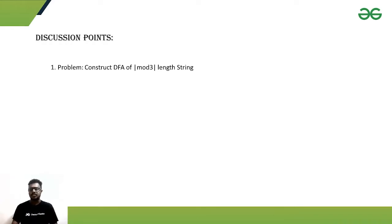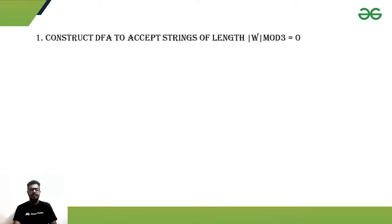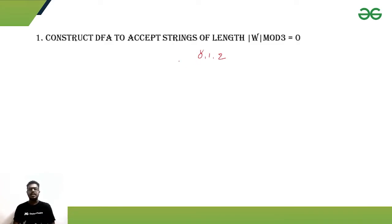Mod 3 means we will get 3 remainders. If we divide any integer by 3, we can get remainders 0, 1, or 2. Getting a remainder of 0 means the length of the string is perfectly divisible by 3.